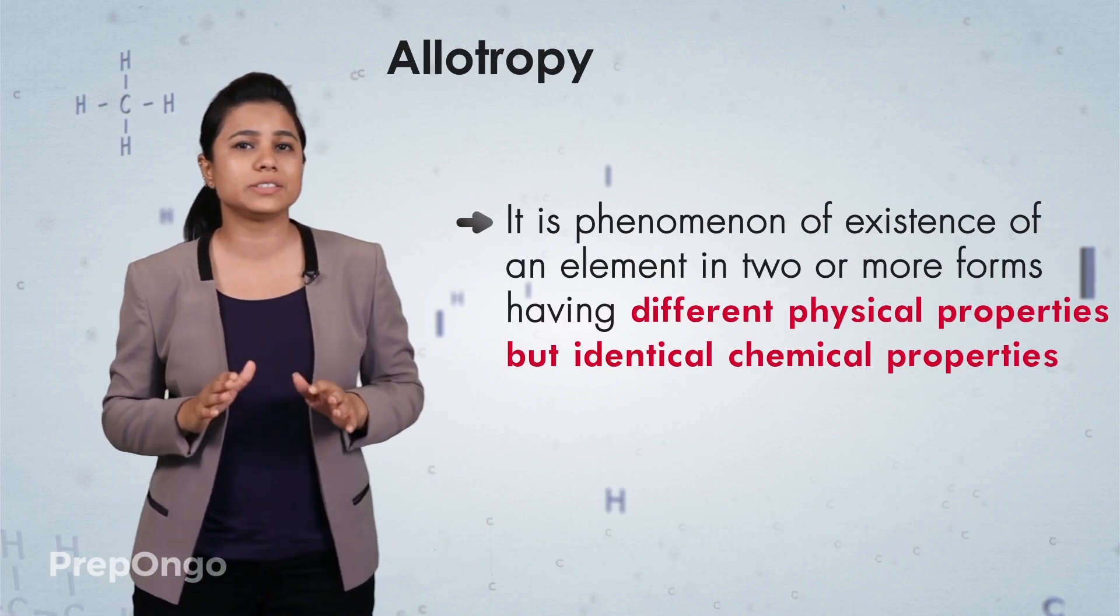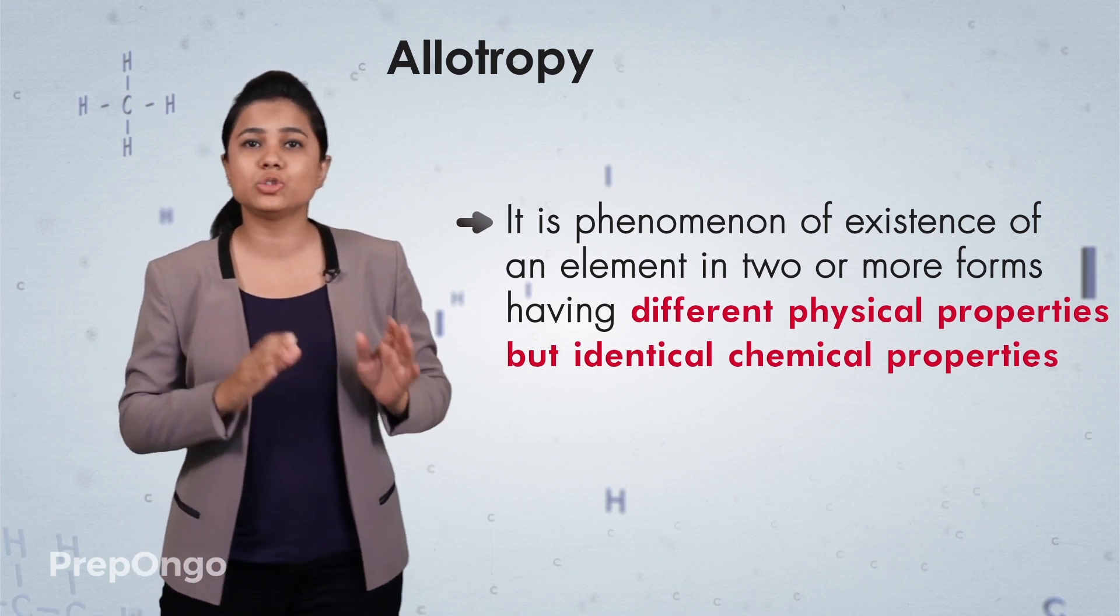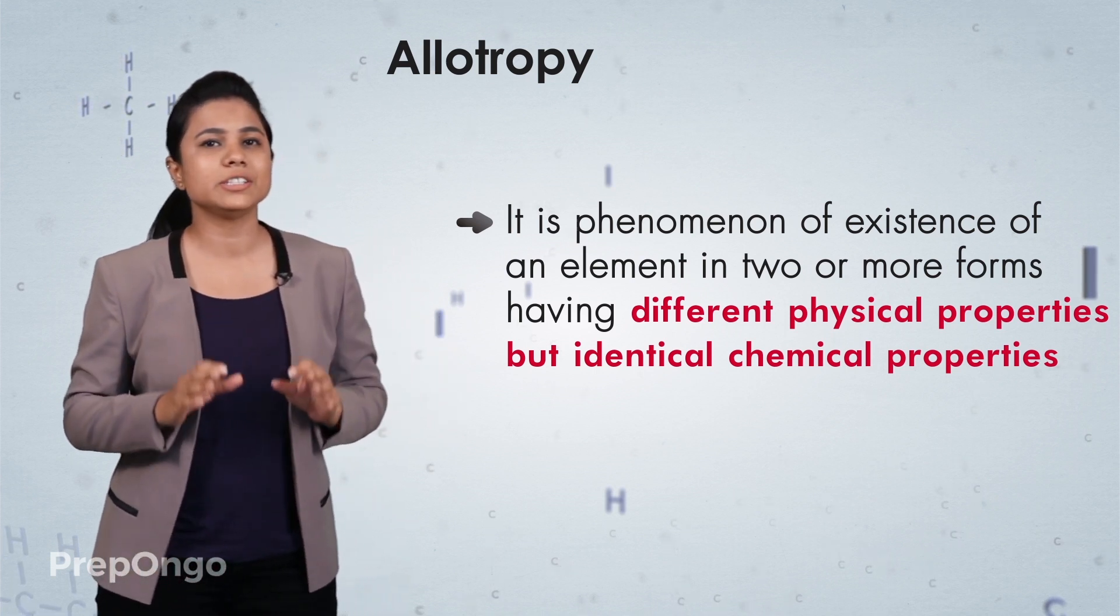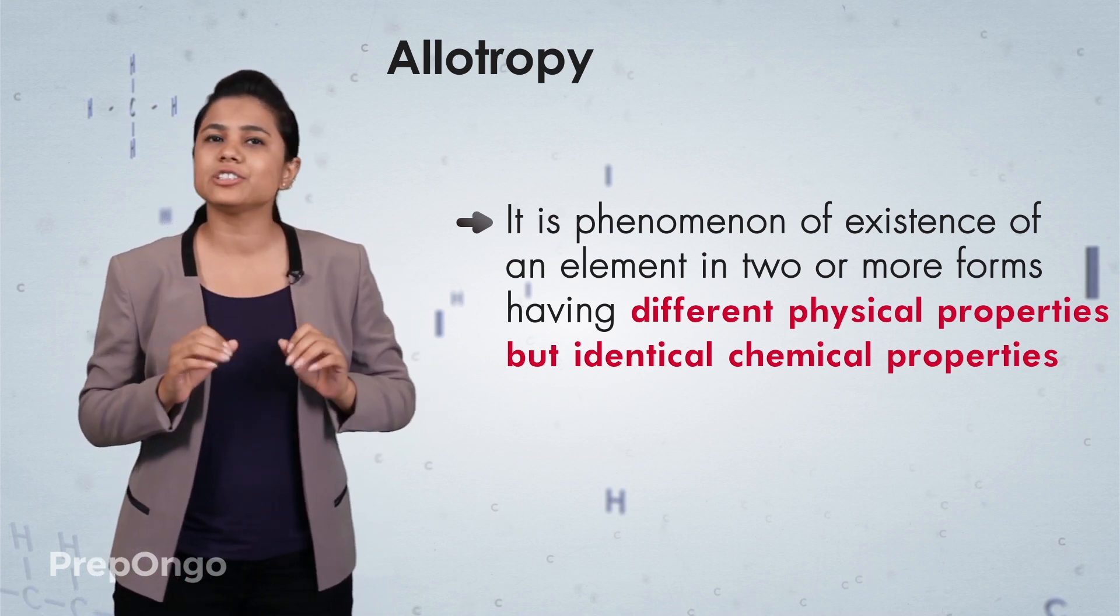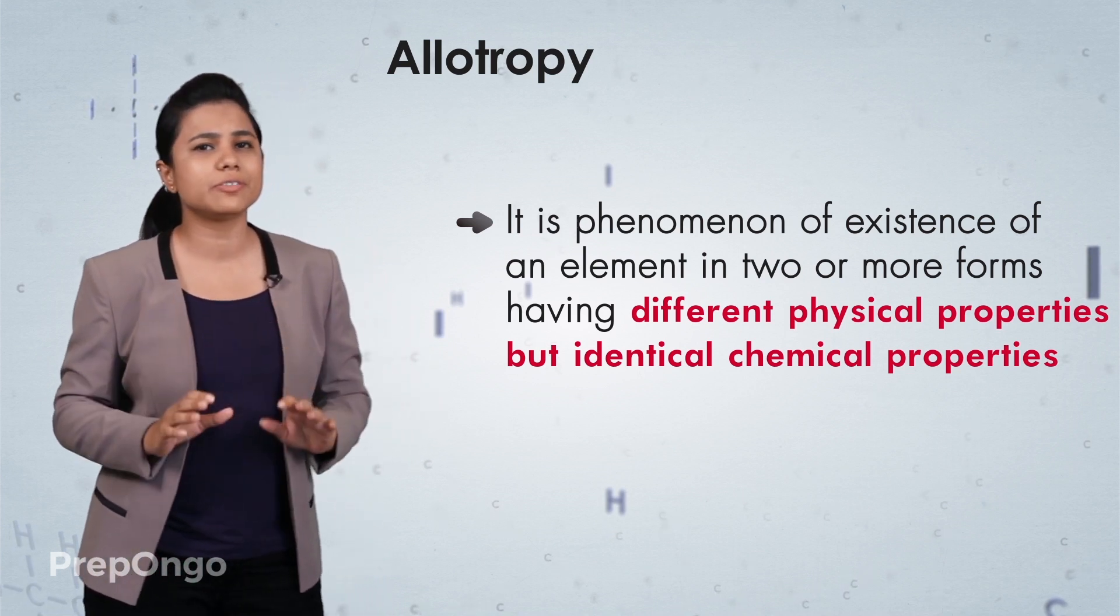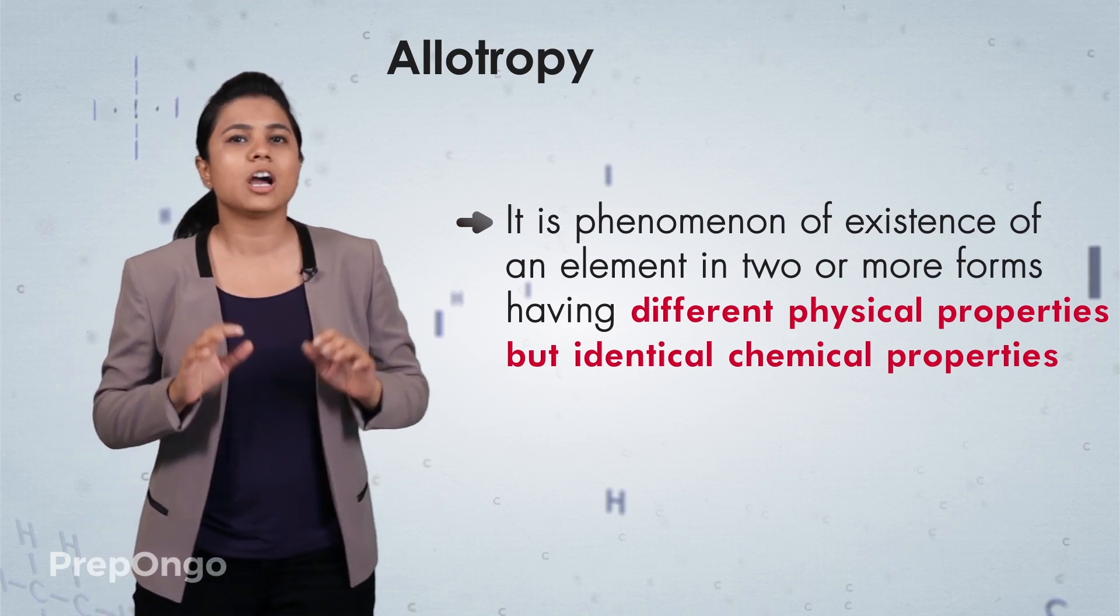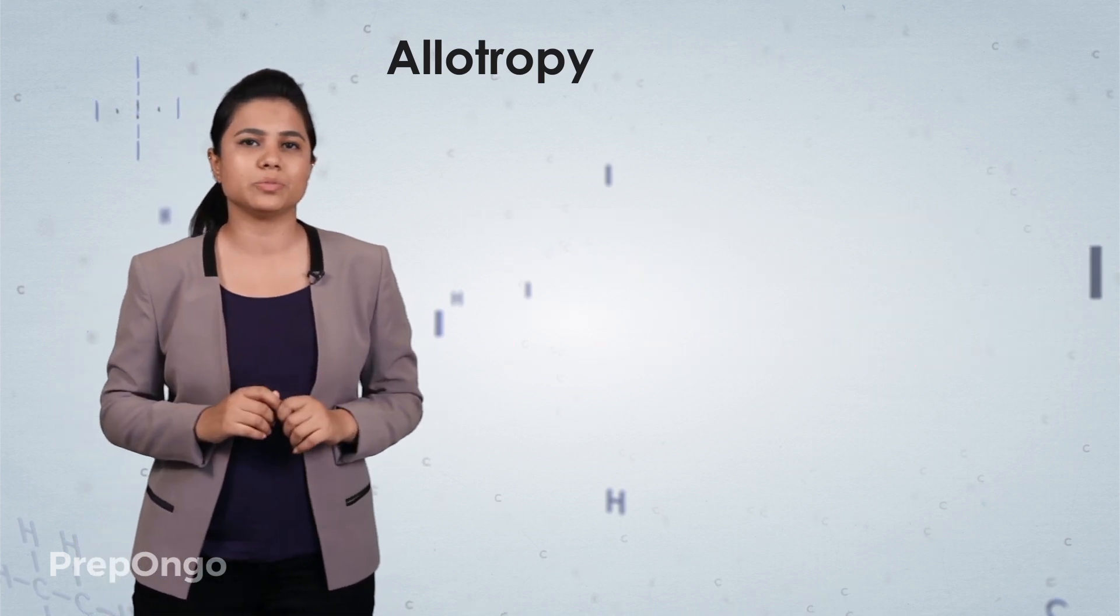It is a phenomenon of existence of an element in two or more forms having different physical properties but identical chemical properties and is called as allotropy. The different forms which are exhibited by it are called as allotropic forms.